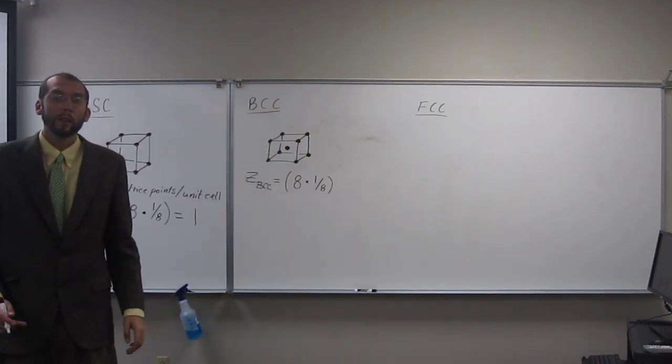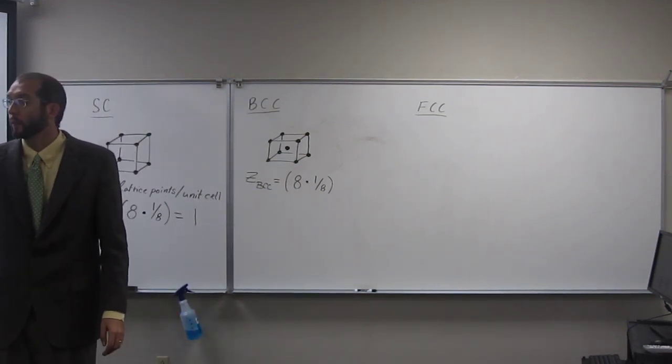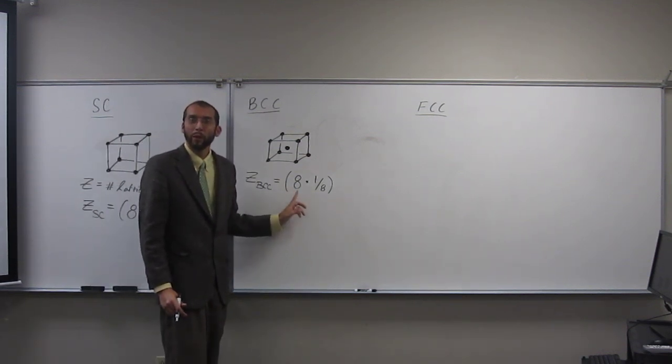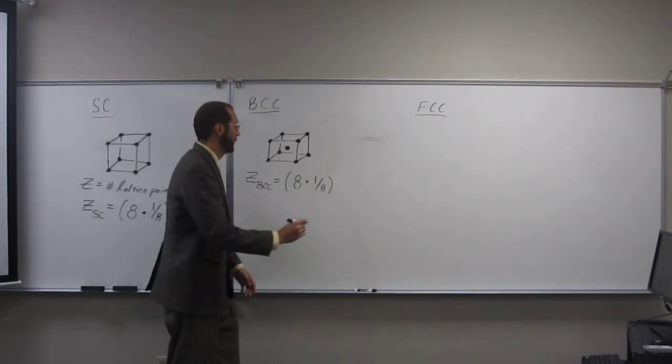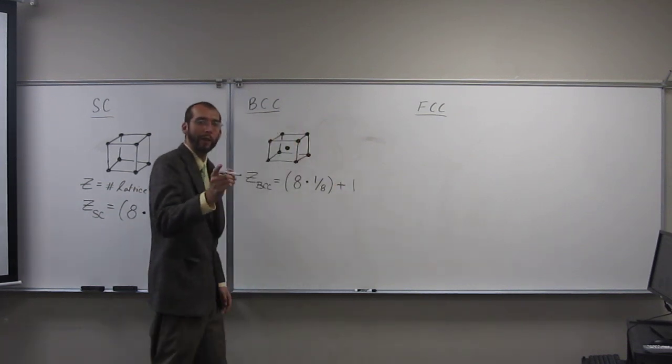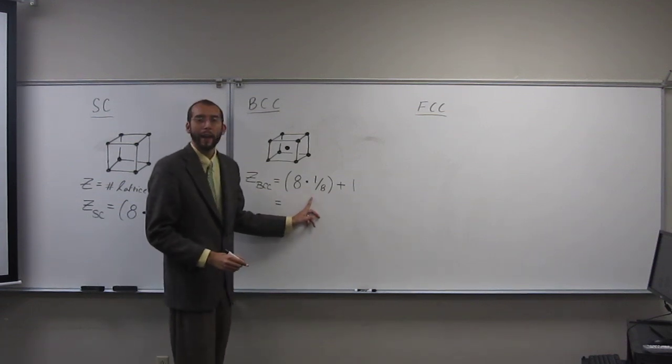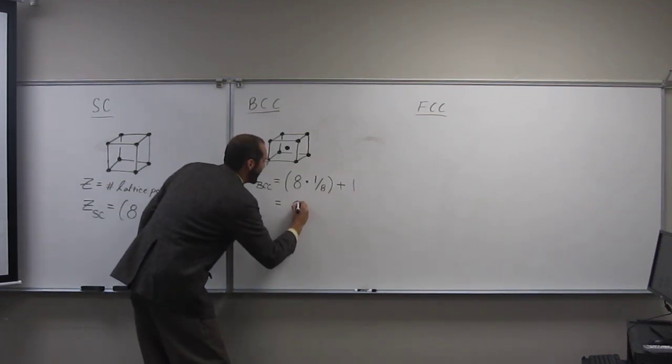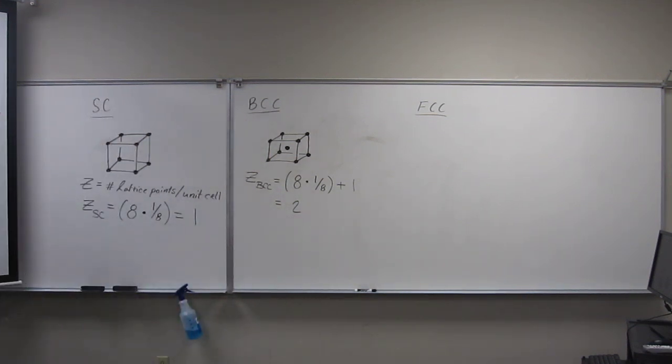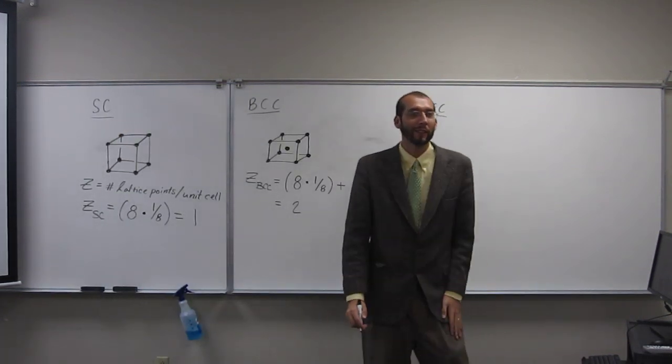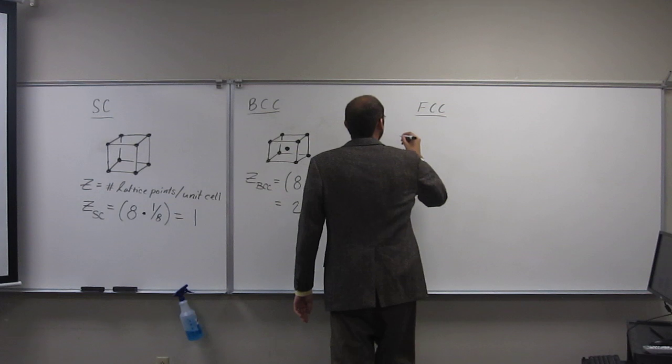Why one? Because of the one that's in the middle. Because there's one in the middle. Okay? So, there's an eighth of eight of them, plus one whole one in the middle. Very impressive. That's awesome. So, what is that? Eight times one-eighth is one. Plus one. That's two. I don't even need my calculator. Okay? Everybody's okay with that? Makes sense? And let's do the last one, the face-centered cubic.